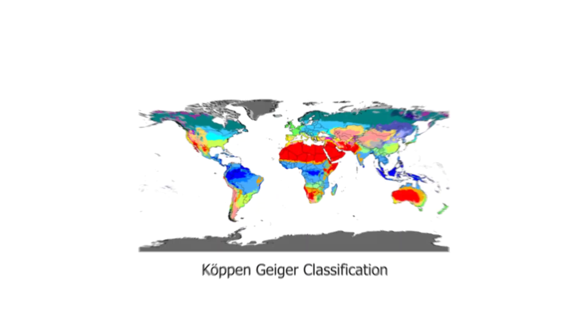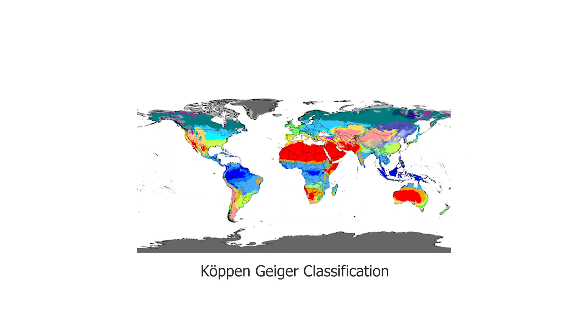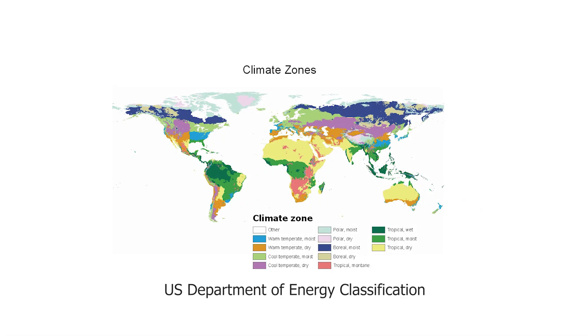Before we move forward with the factors we need to analyze about a climate, we should know that there are different climate zones in the world, and also sub-climate zones within each country. For example, regarding global classification, there are systems like the Köppen classification or the U.S. Department of Energy system, which divide the world into different climate zones based on factors like average temperature, humidity, and others.